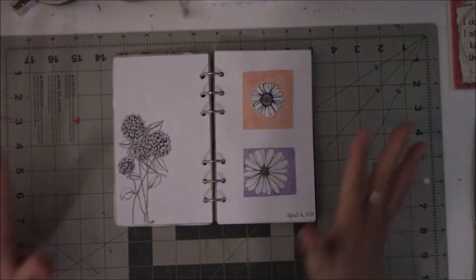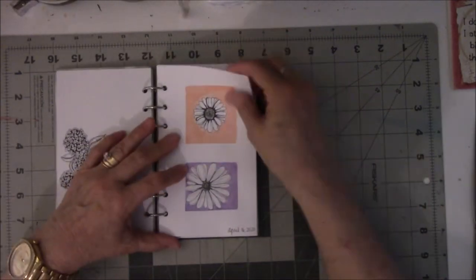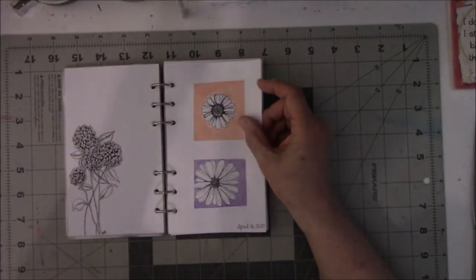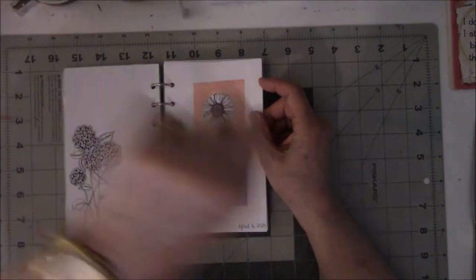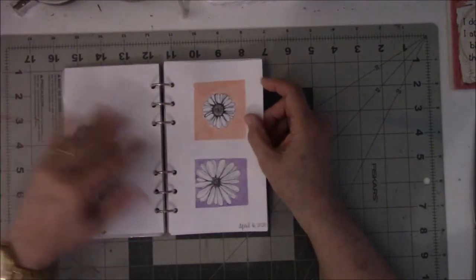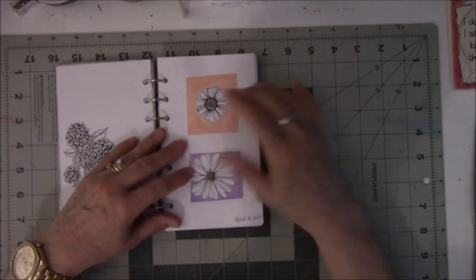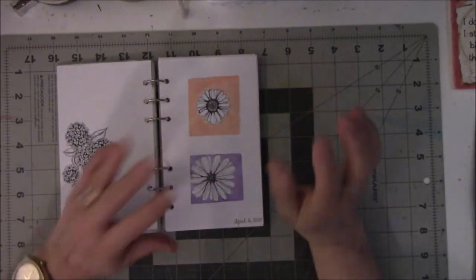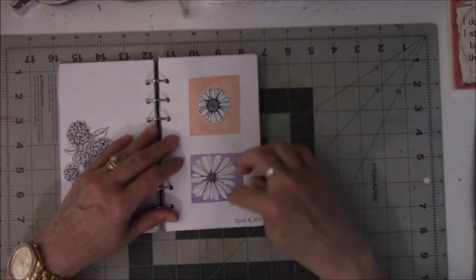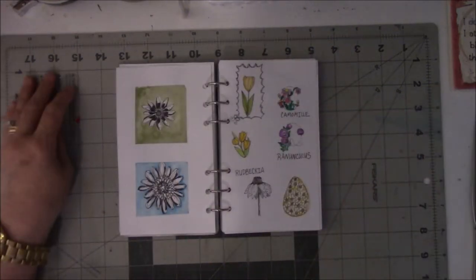Then I watched her do an Instagram video where she put tape down on two-inch by two-inch squares, and then she drew daisies, and she colored them with colored pencils. I'm not wild about colored pencils, so I did mine with watercolor, and I liked it so much that I did it on another page.